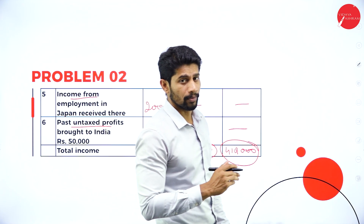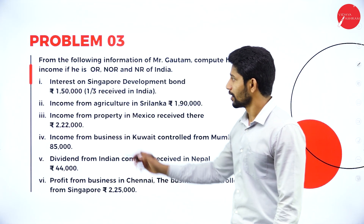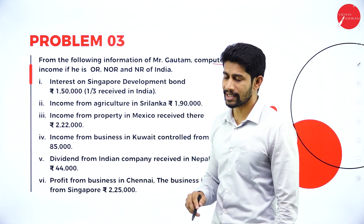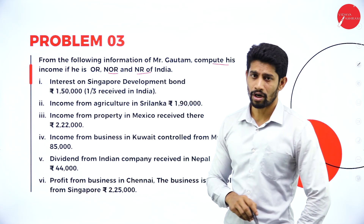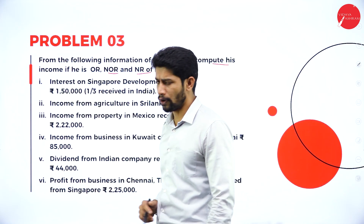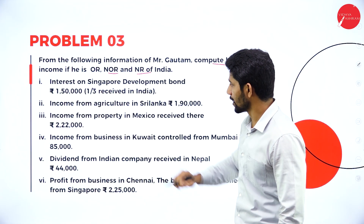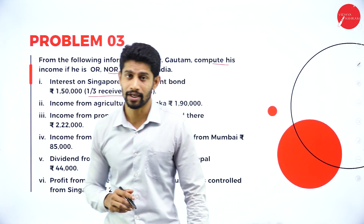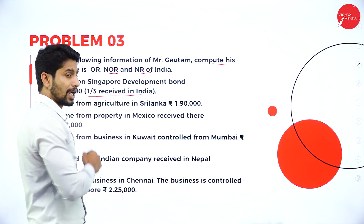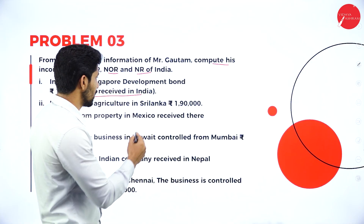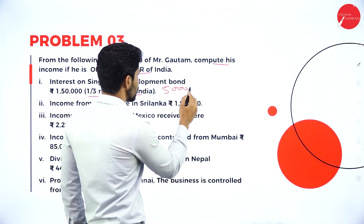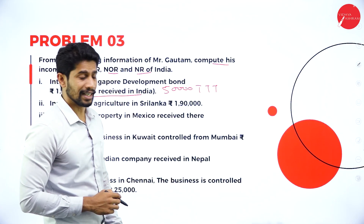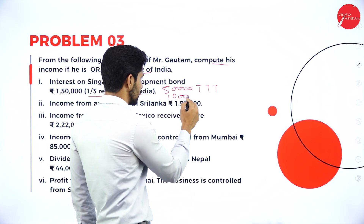Now we move on to the next problem. From the following information of Mr. Gautam, compute his income if he is an ordinary resident, not ordinary resident, or non-resident of India. First point: interest on Singapore development bond — rupees 1 lakh 50,000, one-third received in India. One-third of 1,50,000 is 50,000, so 50,000 is taxable, taxable, taxable because it is received in India. The remaining two-thirds — 1 lakh — is taxable, not taxable, not taxable.